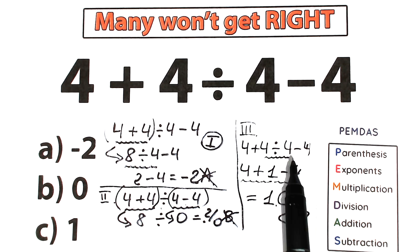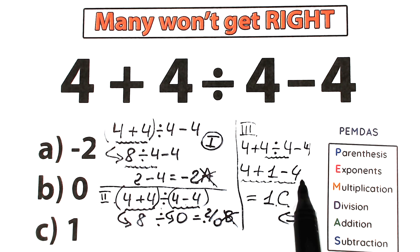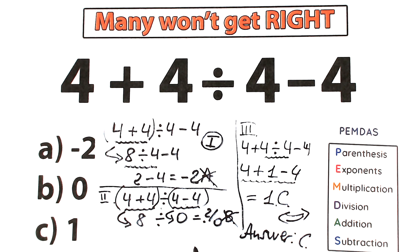The correct solution is Option C, because we solved it according to the correct order of operations: division first, then addition and subtraction in strict order from left to right. The correct answer to our challenge is 1. I hope your answer is the same as mine, and definitely don't feel bad if you got it wrong — it happens that you forget the order of operations. I hope you'll get better at this through practice. Thank you for your time, see you in the next videos, and have a great day!